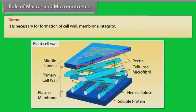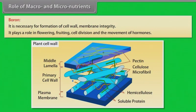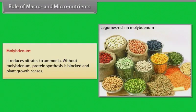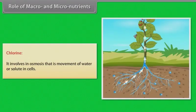Boron: it is necessary for formation of cell wall and membrane integrity. It plays a role in flowering, fruiting, cell division and the movement of hormones. Molybdenum: it reduces nitrates to ammonia. Without molybdenum, protein synthesis is blocked and plant growth ceases. Chlorine: it is involved in osmosis, that is the movement of water or solutes in cells.